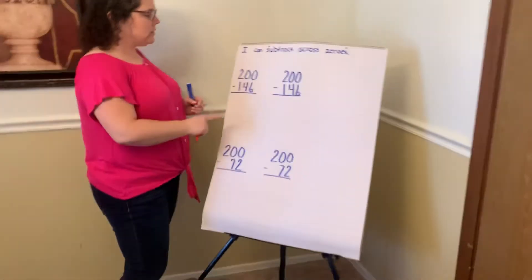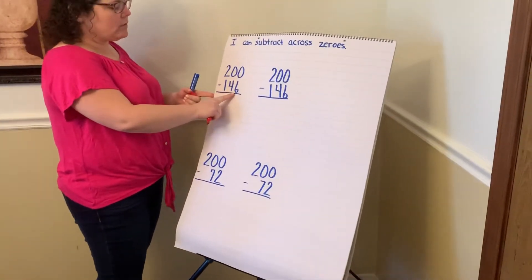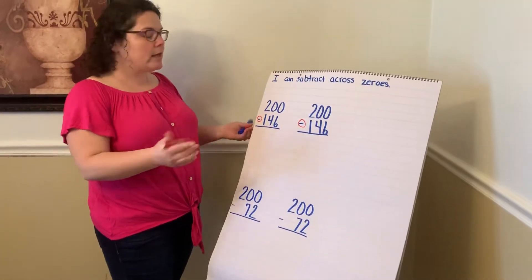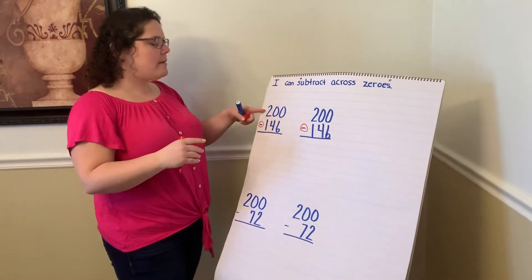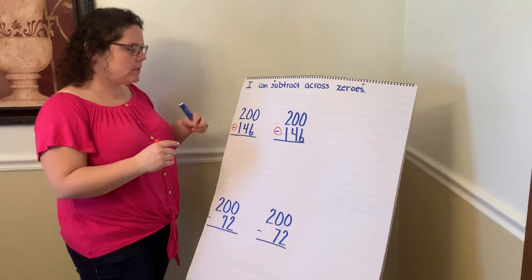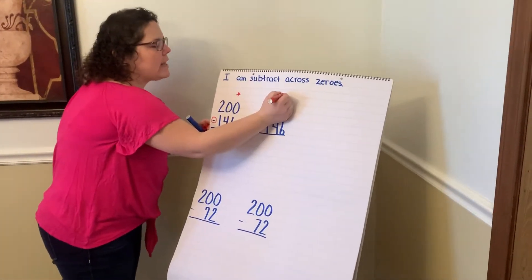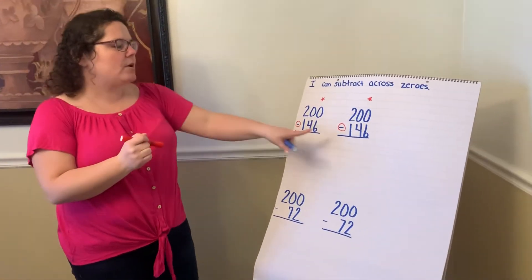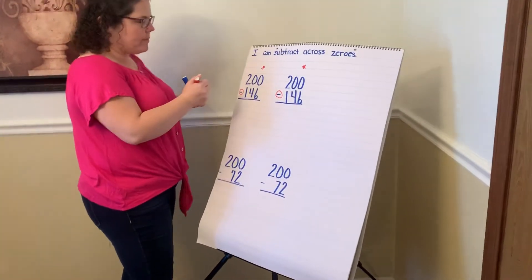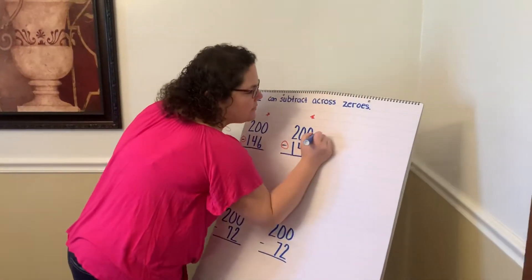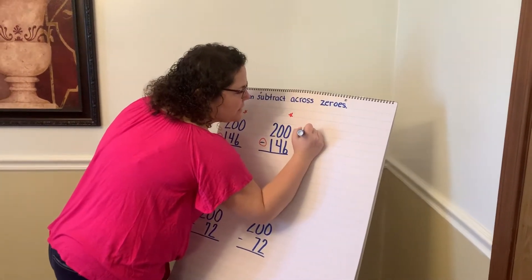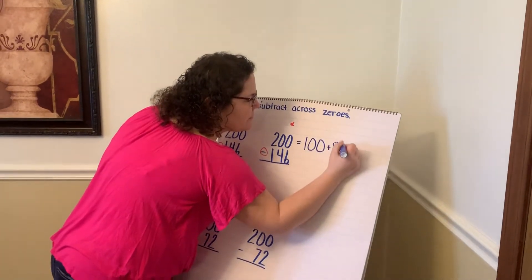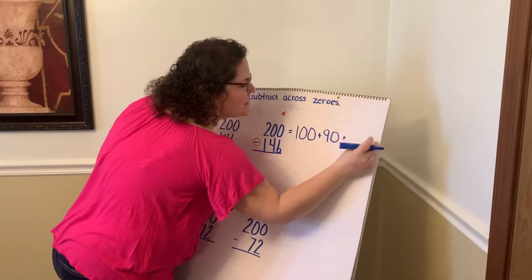So let's begin by looking at our equation. We have 200 minus 146. I'm going to circle my subtraction symbol because that tells our brain that we're looking for that partner, not the total. That means our answer has to be less than 200. I'm going to star the ones column because I'm always going to start there. So the first thing I'm going to do is start with the expanded form. And if you remember, we expanded 200 into saying that 200 was equal to or the same as 100 plus 90 plus 10.